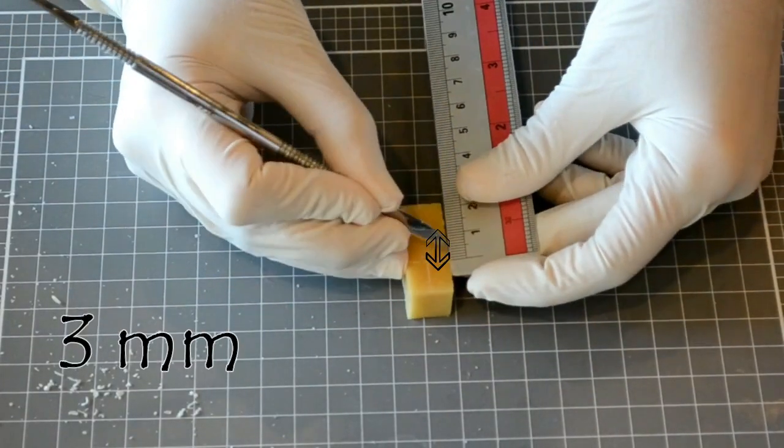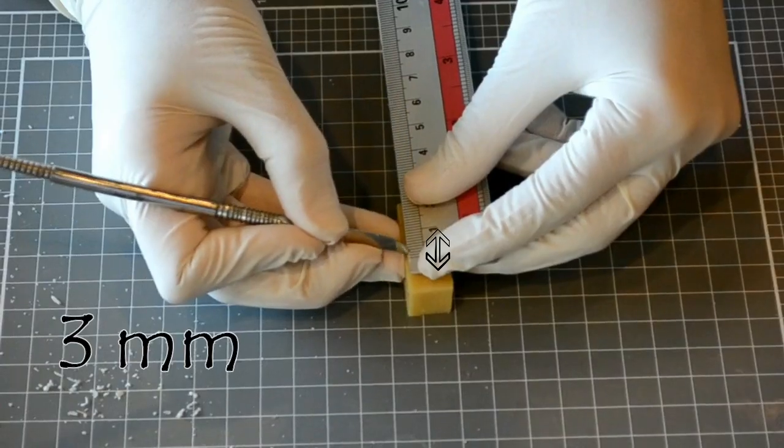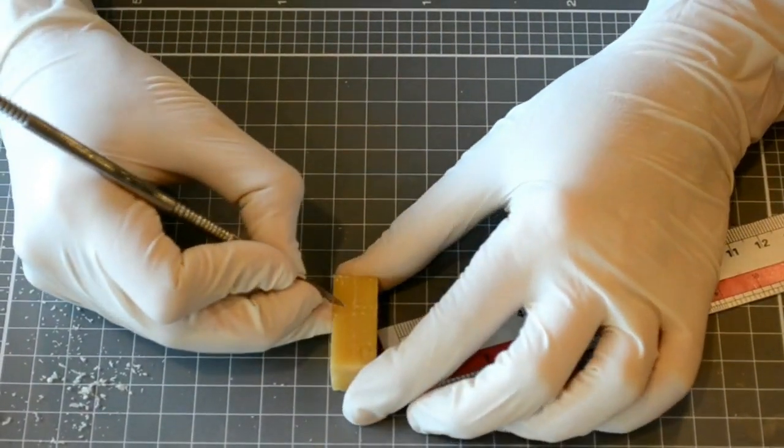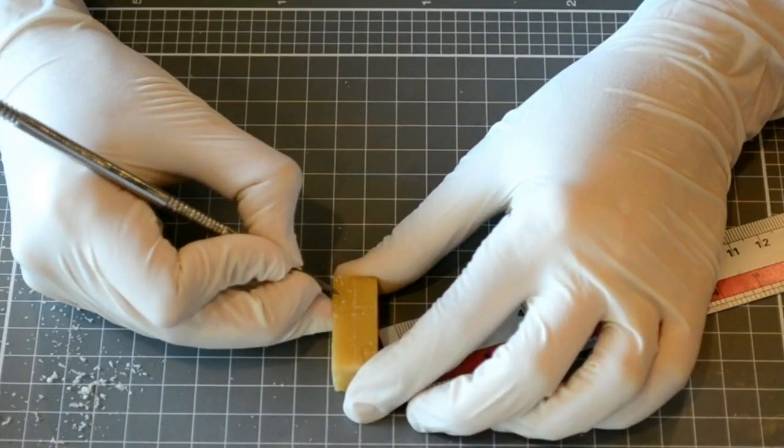Next, extend 3 millimeters of the cervical portion of the crown to mark the root. After you set your measurements, use your lecron carver to draw the outline of the tooth.